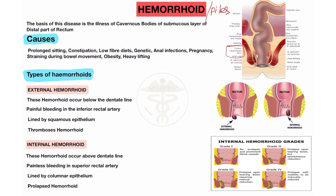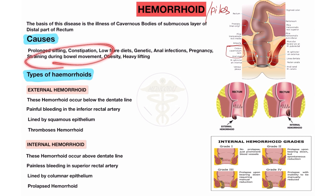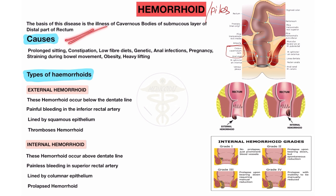So there are many causes of hemorrhoids: prolonged sitting, constipation, low fiber diet, genetic causes, anal infection, pregnancy, straining during bowel movement at the time of defecation, and also obesity and heavy lifting. These are the causes of hemorrhoid.